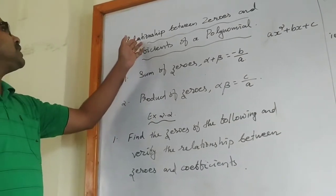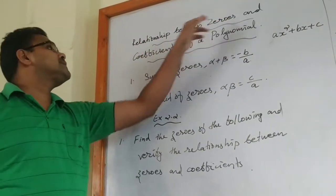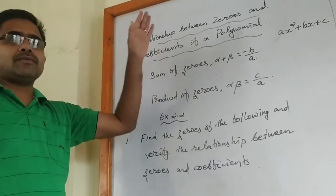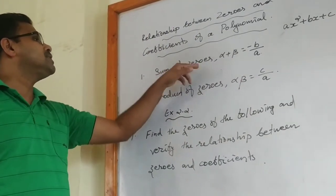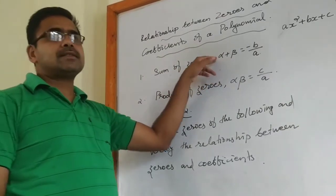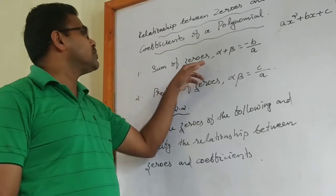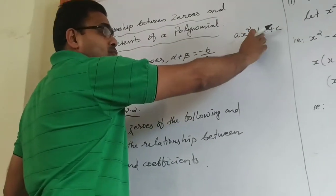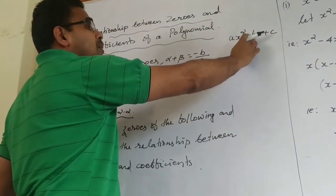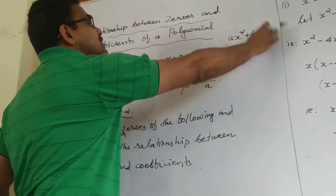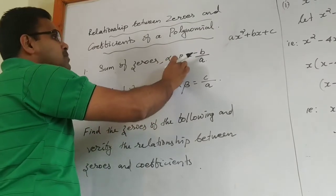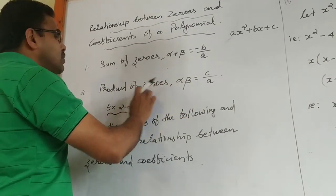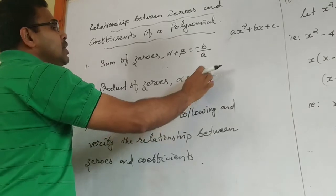Our next portion is the relationship between zeros and coefficients of a polynomial. The two zeros are alpha and beta. Sum of zeros: alpha + beta = −b/a. Product of zeros: alpha × beta = c/a.